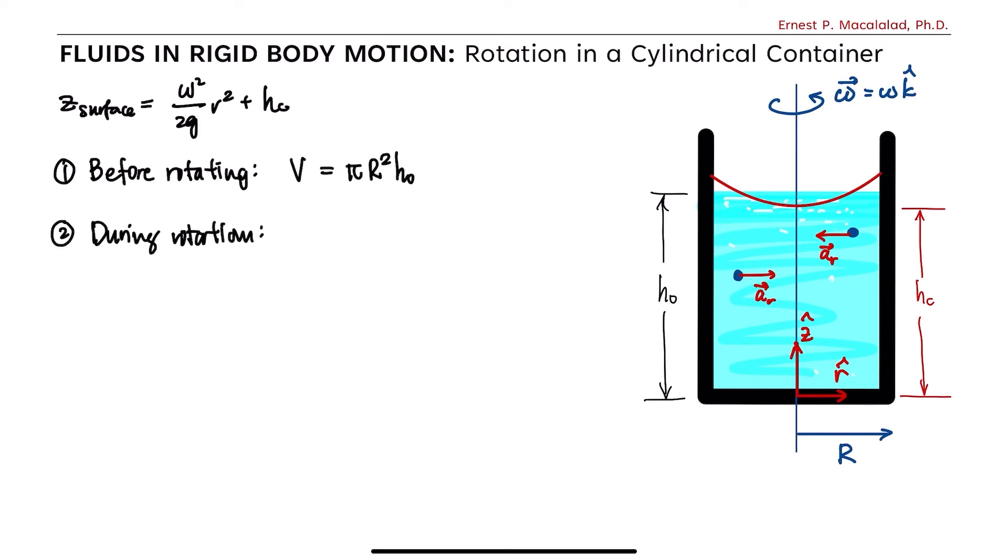On the other hand, when it is rotating, the volume of the liquid is equal to the integral of dv, where dv is the volume element in cylindrical coordinate system. So here, the volume element dv is 2 pi r z of the surface times dr, where z surface is the distance of the surface from the bottom of the container.